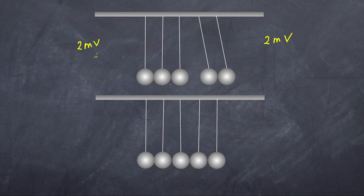If we now look at the kinetic energy, remember kinetic energy is a half mv squared. But we have two masses, so now the total kinetic energy becomes mv squared on this side.